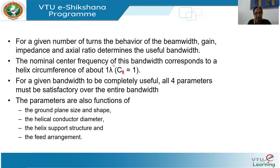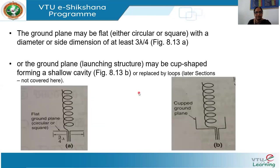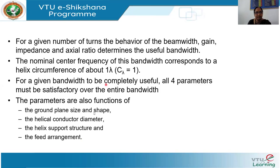The parameters — beam width, gain, impedance, and axial ratio — define the bandwidth. These parameters also change with the ground plane type, size, and shape; the helical conductor diameter; the support structure; and the feed arrangement. We will look at how each of these affects the antenna properties.